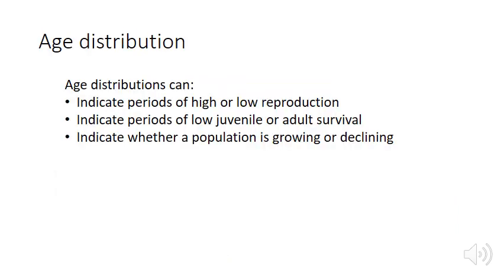The second element of population structure is age distribution. By studying age distribution we can get a sense of periods of high or low reproduction in the recent history of a species or population, get an indication of periods of low juvenile or adult survival, and get an idea of whether a population is growing or declining.